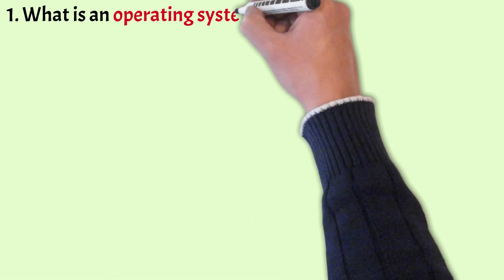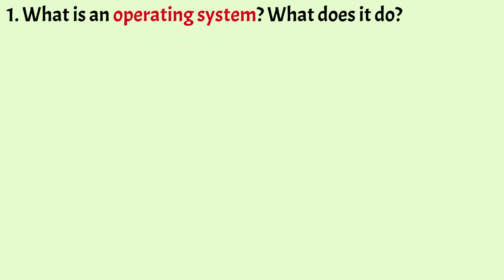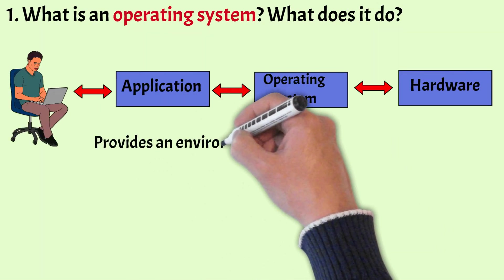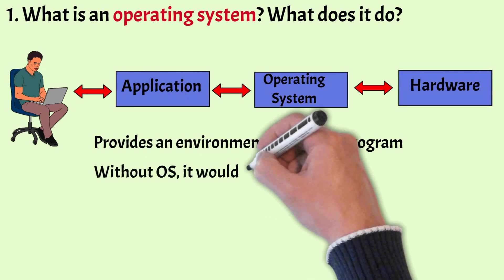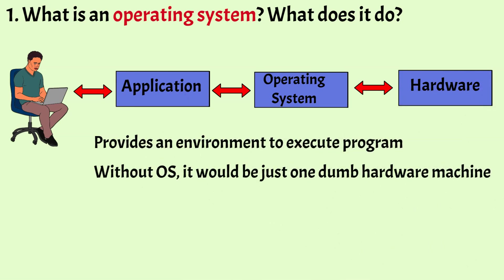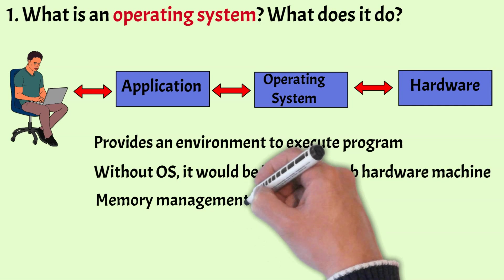What is an operating system? What does it do? The operating system acts as an interface between the user and computer hardware components. It is a system software that provides an environment in which a user can execute programs easily. Every computer system needs an operating system to be able to run programs and interact with the users.